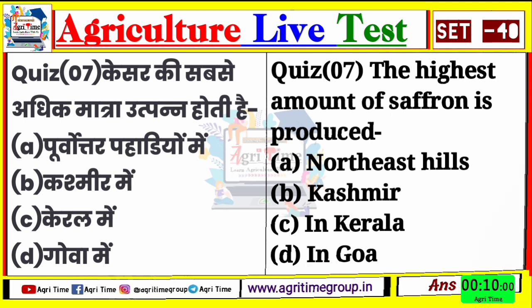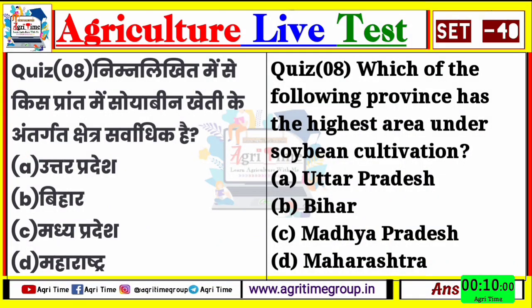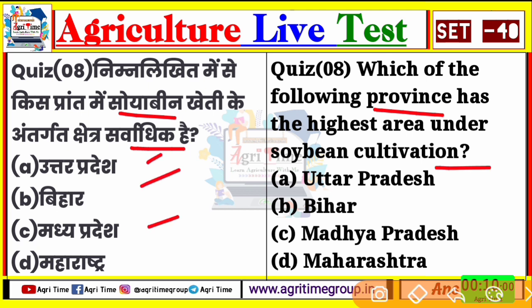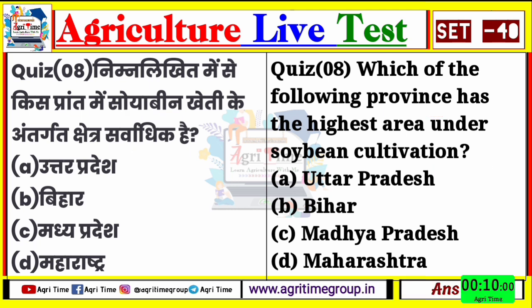ये रहा आपके screen पर - निम्नलिखित में किस प्रांत में सोयाबीन की खेती के अंतर्गत क्षेत्र सर्वाधिक है? Which of the following province has the highest area under soybean cultivation? Options दिये हैं: उत्तरप्रदेश, बिहार, मध्यप्रदेश और महाराष्ट्र। ये question simple है, थोड़े समझने वाली है। Comment कीजिए quiz 8 का right answer क्या होगा।